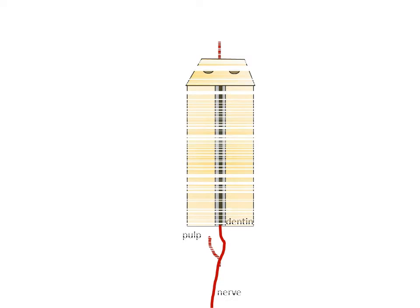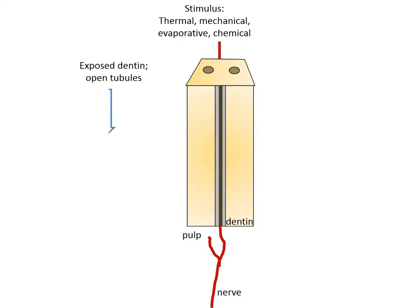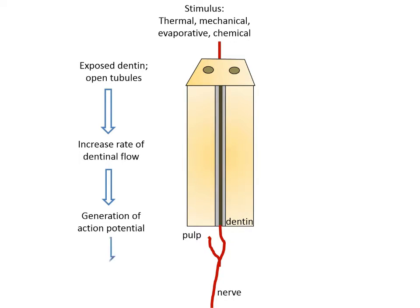Let's recap the mechanism of dentine hypersensitivity from the previous presentation. In response to stimulus — thermal, mechanical, evaporative, or chemical — the dentinal tubules in the exposed dentine open up. The rate of dentinal fluid flow in these open exposed tubules is increased, which consequently results in the generation of an action potential that passes to the brain and results in the sensation of pain.